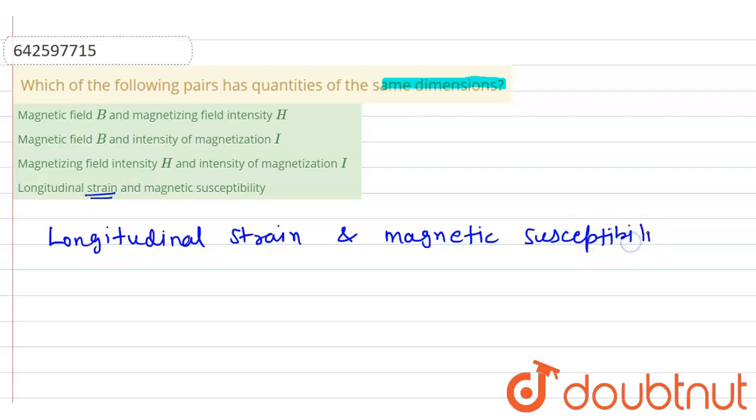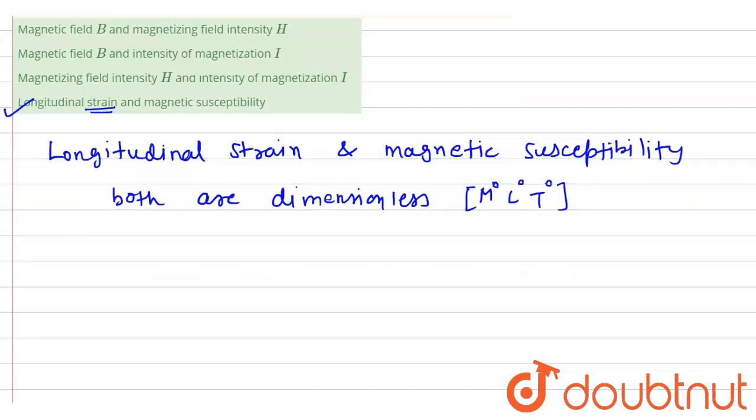Magnetic susceptibility, both are dimensionless. Both are dimensionless and its dimension is M^0 L^0 T^0. So these two have same dimensions, okay? So if we come to magnetic field intensity: